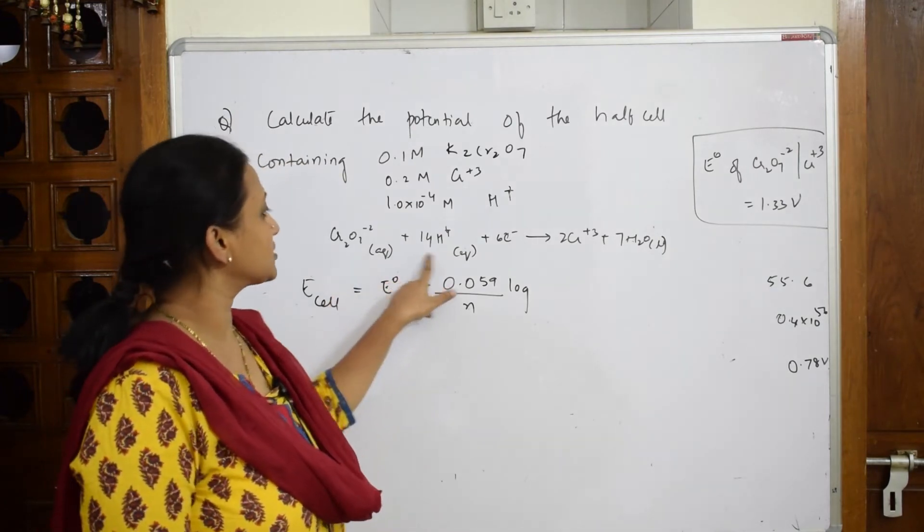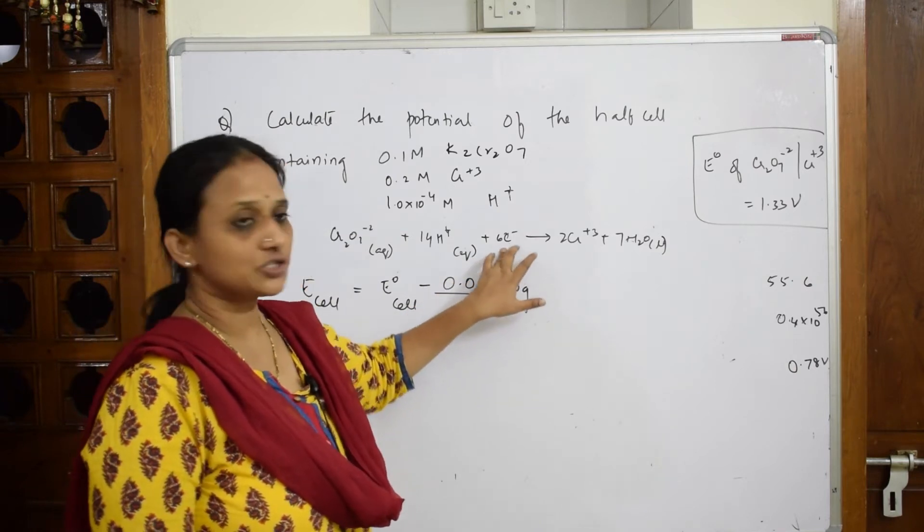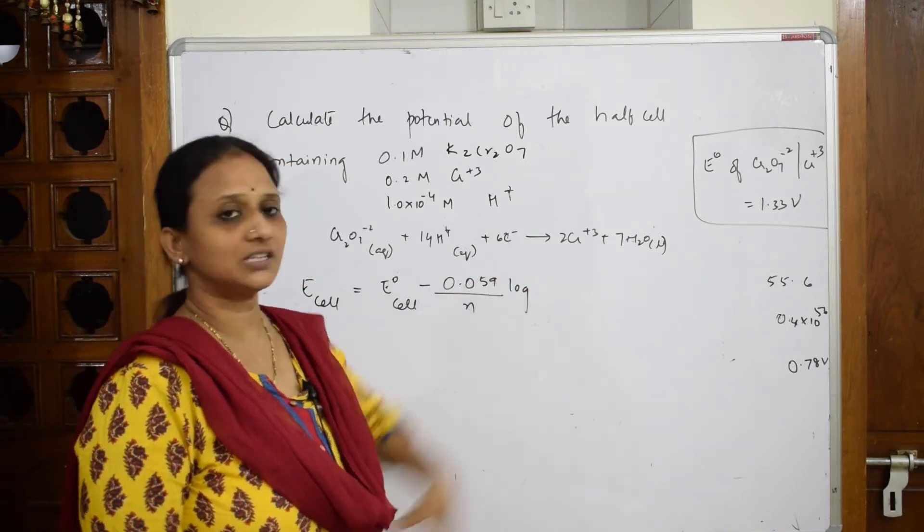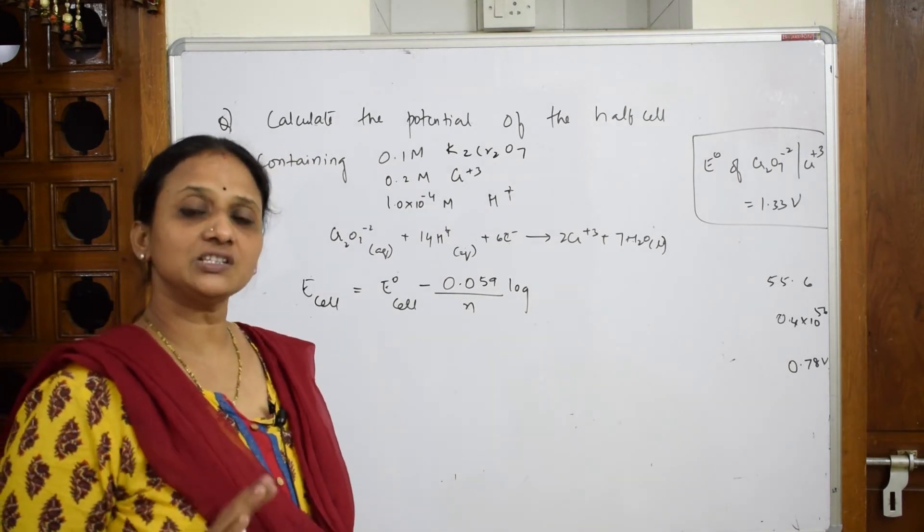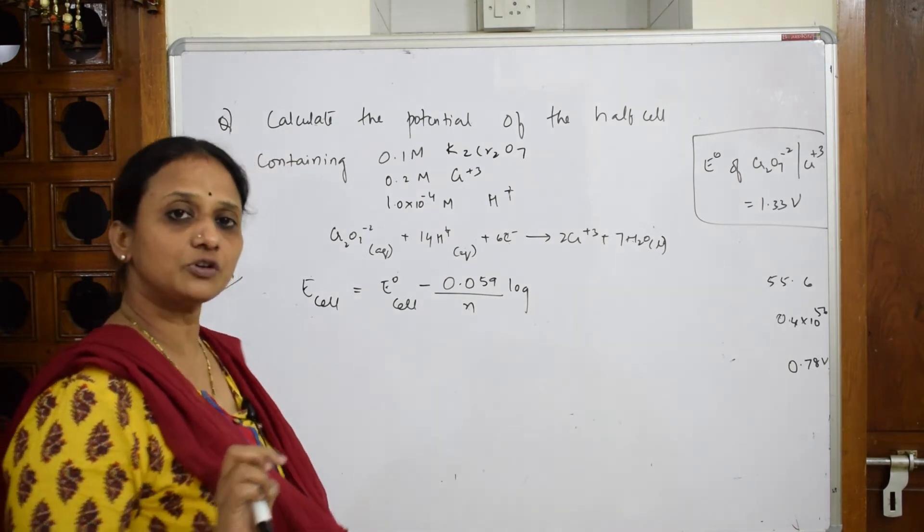See here they've given you a balanced reaction. That means after transaction of 6 electrons they've given you a balanced reaction. The reaction has reached an equilibrium state. So when the reaction has reached an equilibrium state, what is the formula we write?